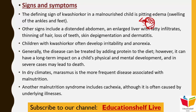Children with Kwashiorkor become very irritable and also develop anorexia — decreased appetite, meaning they lose their sense of hunger. Generally, this disease can be treated by adding protein to the diet; however, the impact on a child's physical and mental development is long-term. In very severe cases, even adding protein or other dietary interventions cannot help, and death occurs.